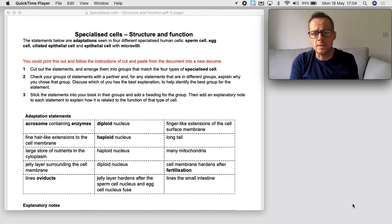What I would like you to have a look at is this cut and stick exercise on specialized cells. Now it talks about the four different types of specialized cells we've looked at: sperm cells, egg cells, ciliated epithelial cells and epithelial cells with microvilli.